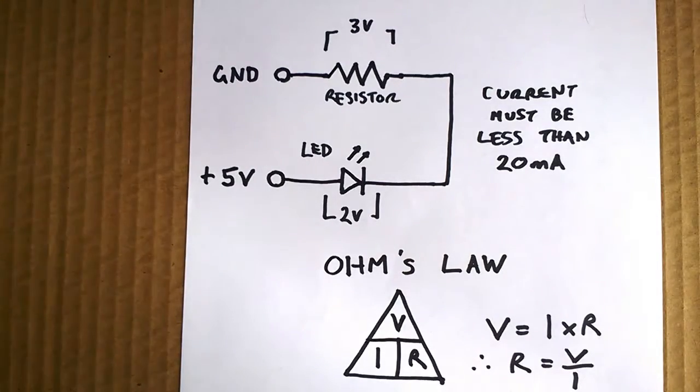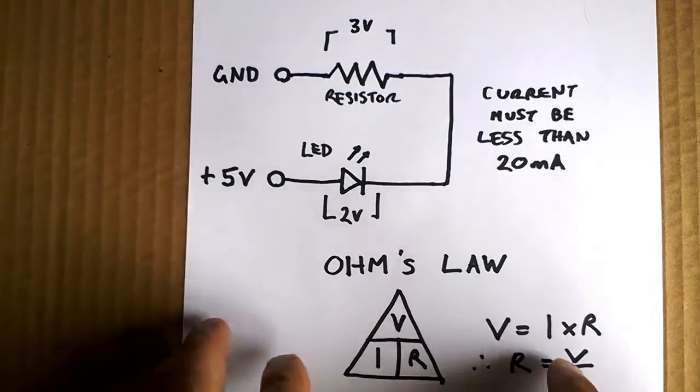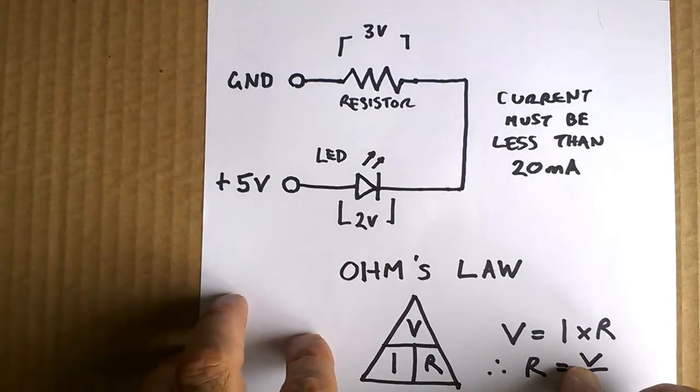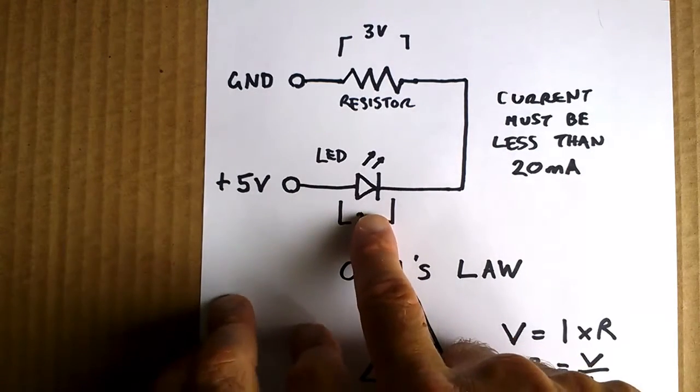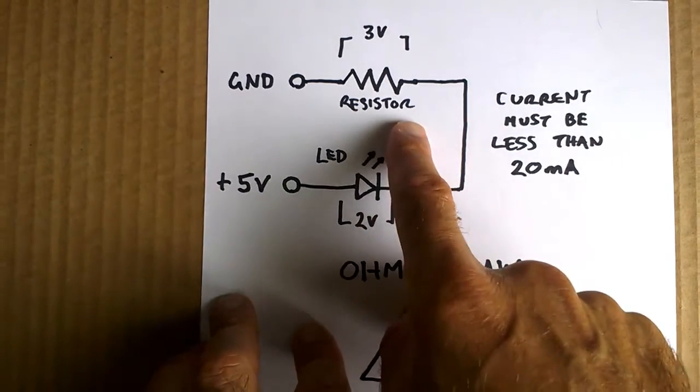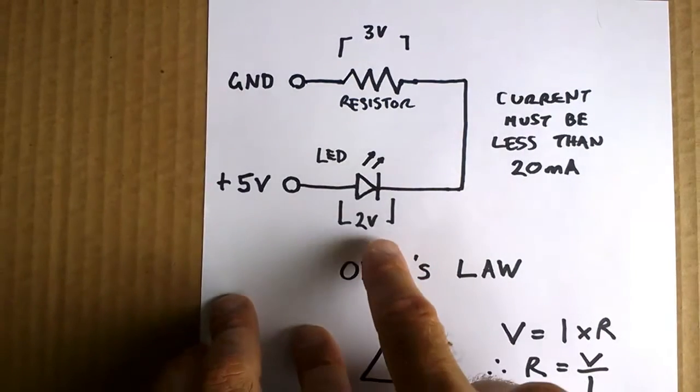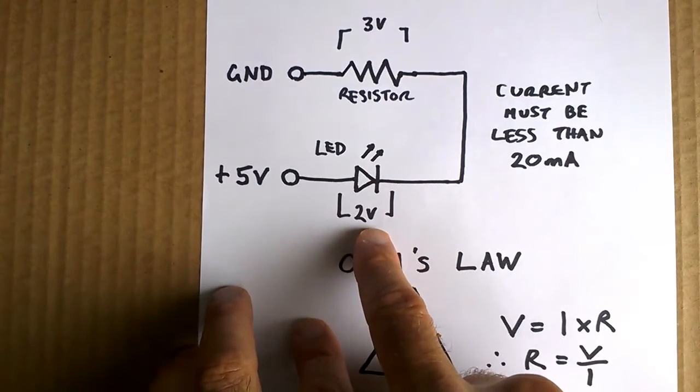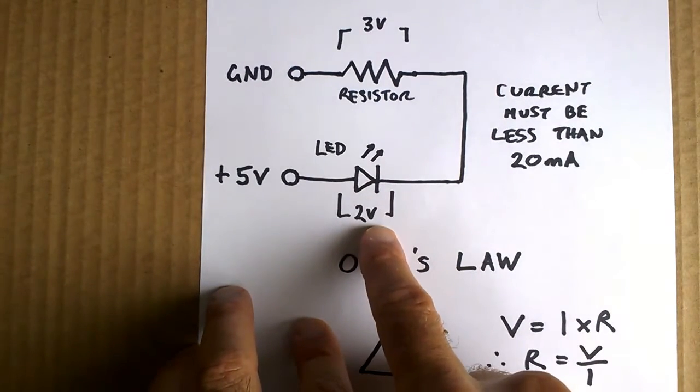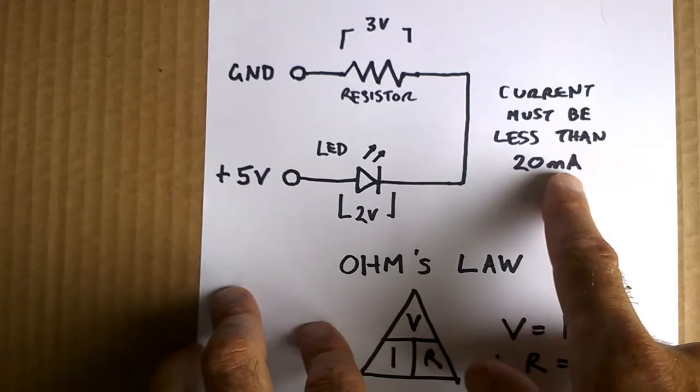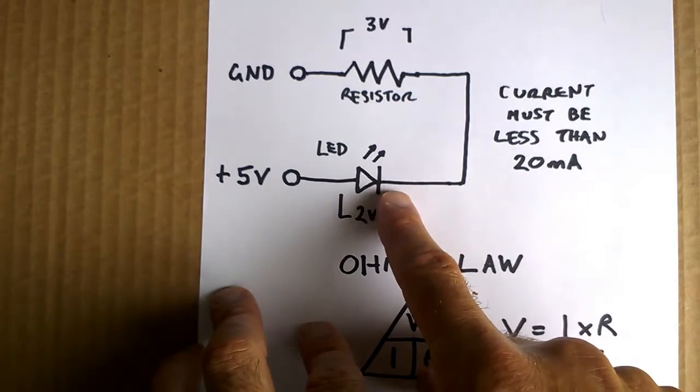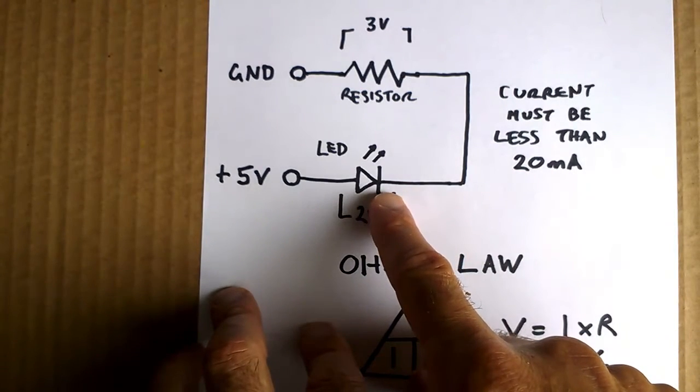To work out which value we need for our resistor we can use Ohm's Law. So here we have our circuit, we have our 5 volts coming from our Arduino, going through the LED, through the resistor, back to ground. So there's a voltage drop of around about 2 volts over the LED. Our current we want to be less than 20 milliamps because this is about as much current as the LED can take.